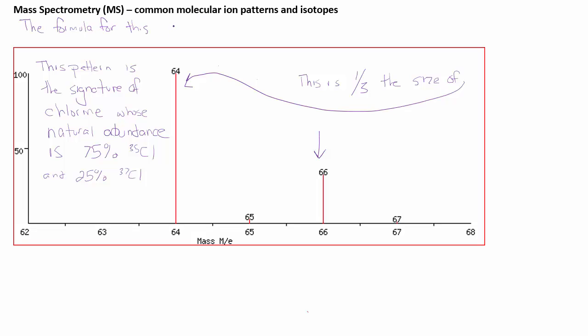When you see this molecular ion pattern where there's one peak that is about three times the size of the next, that's two mass units higher, this is a positive indication for chlorine present in the sample.